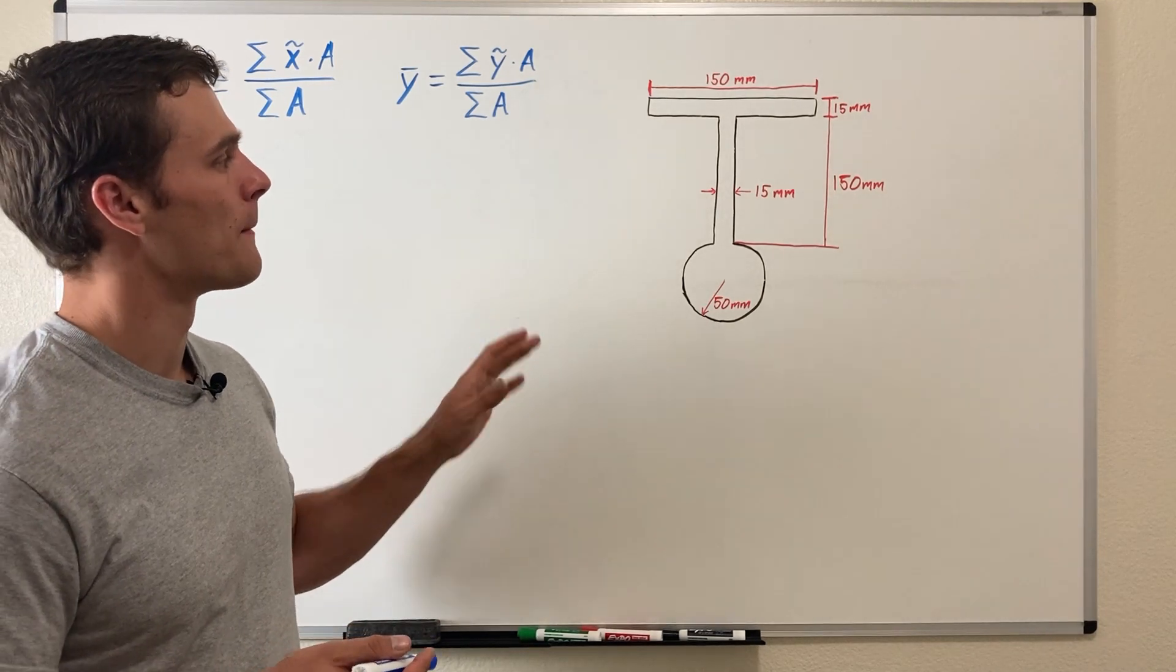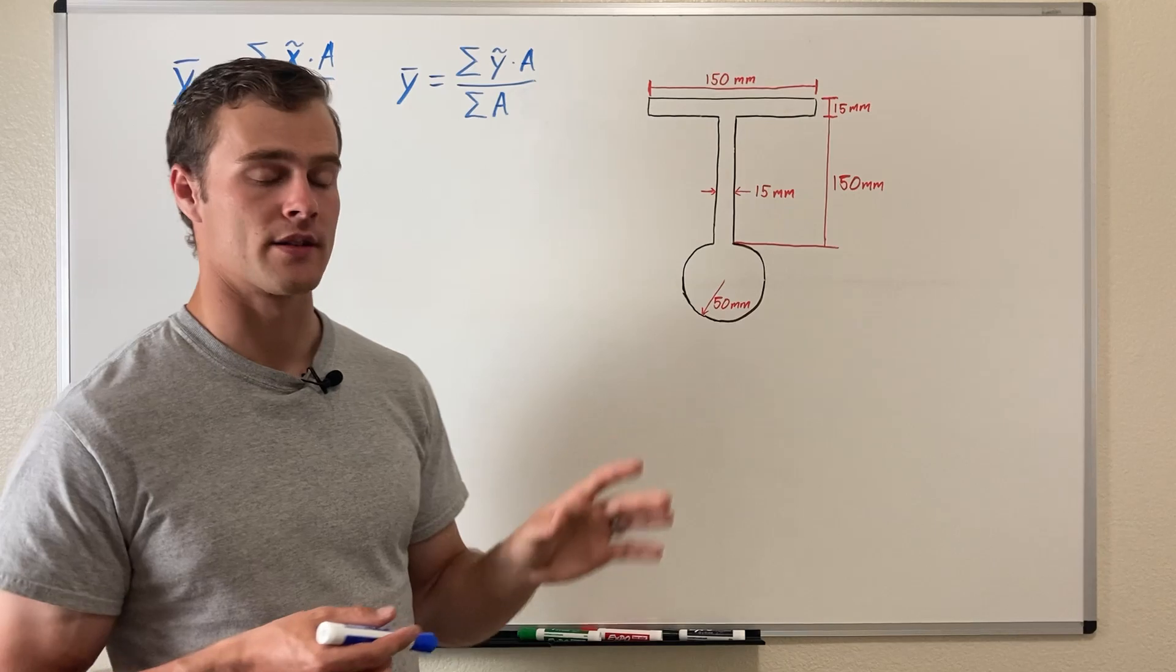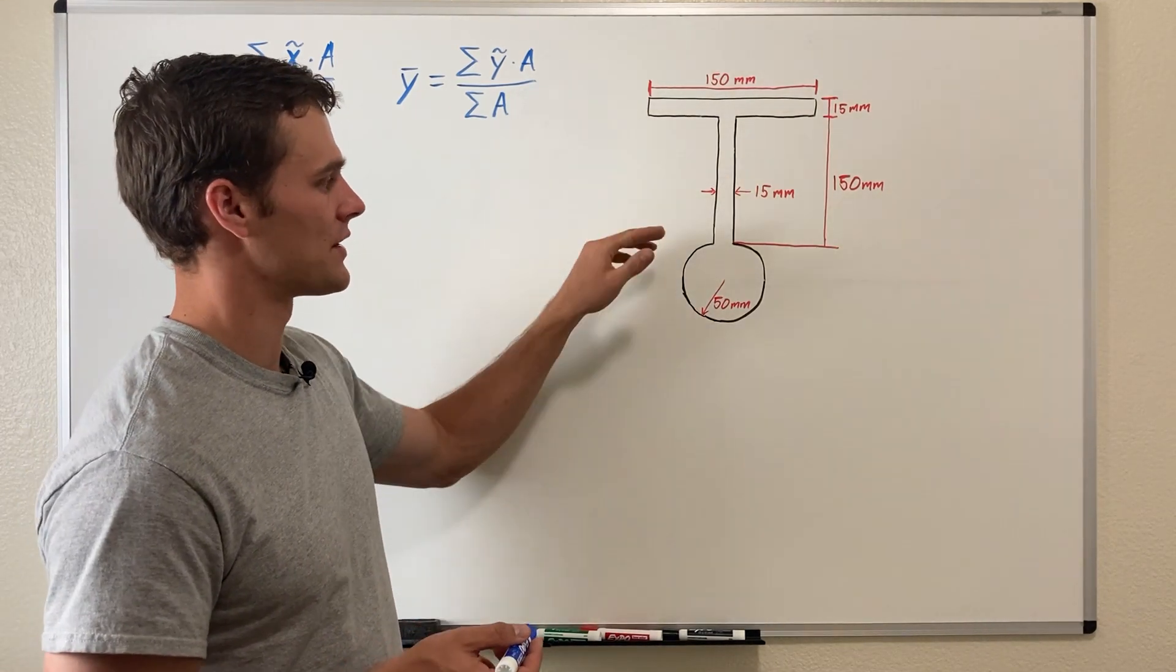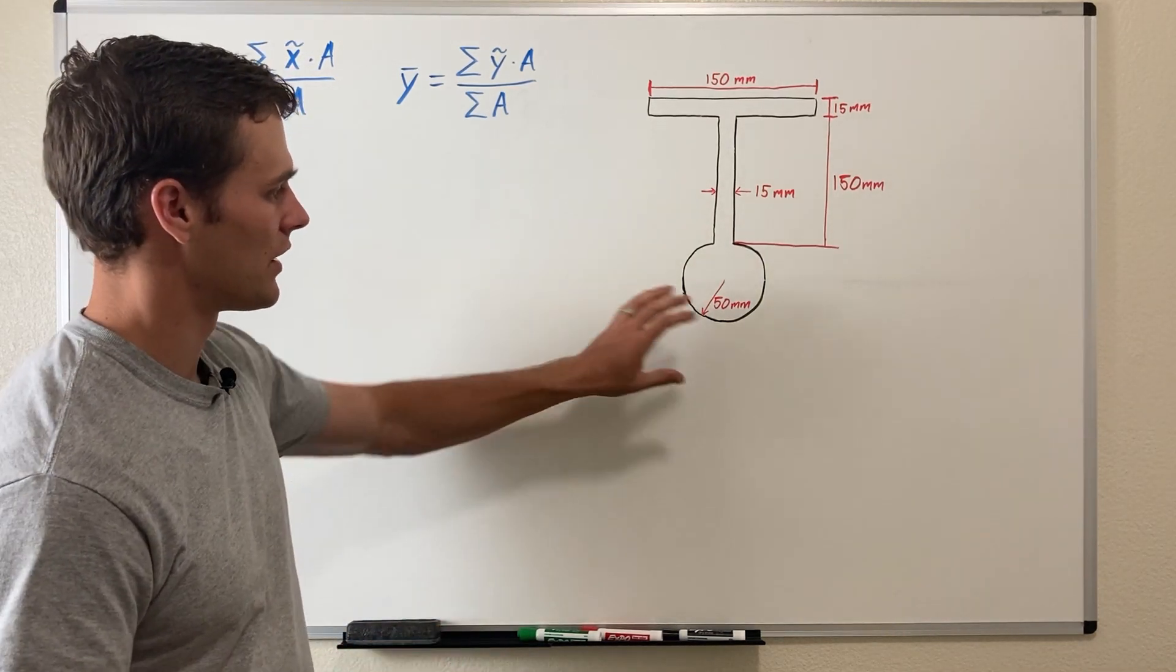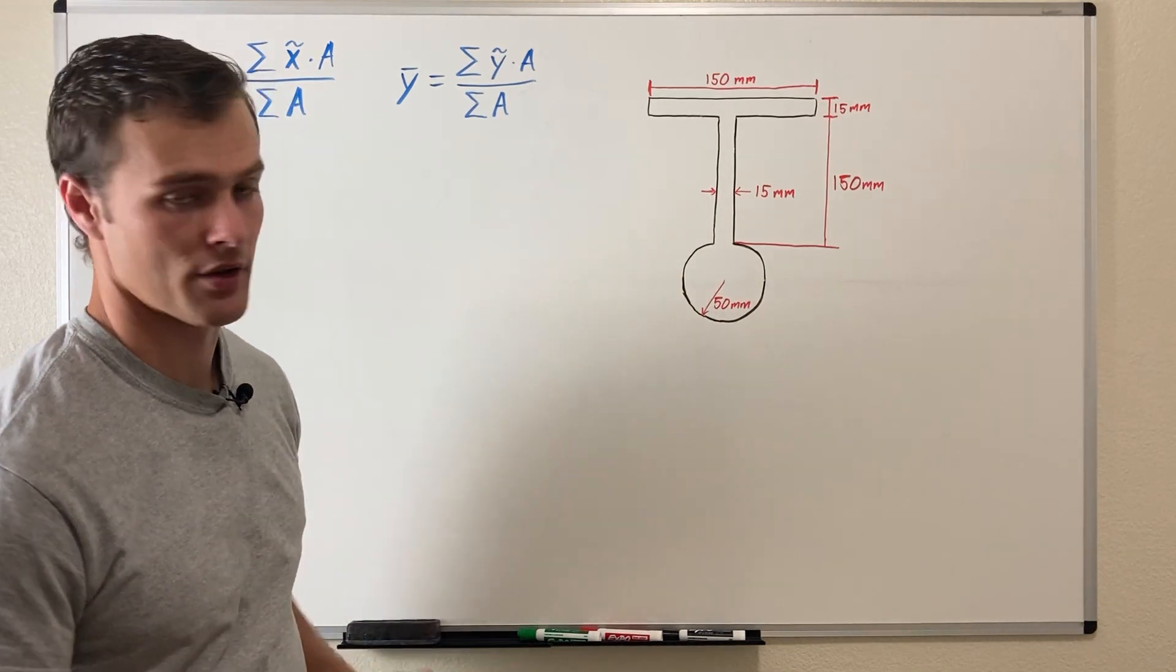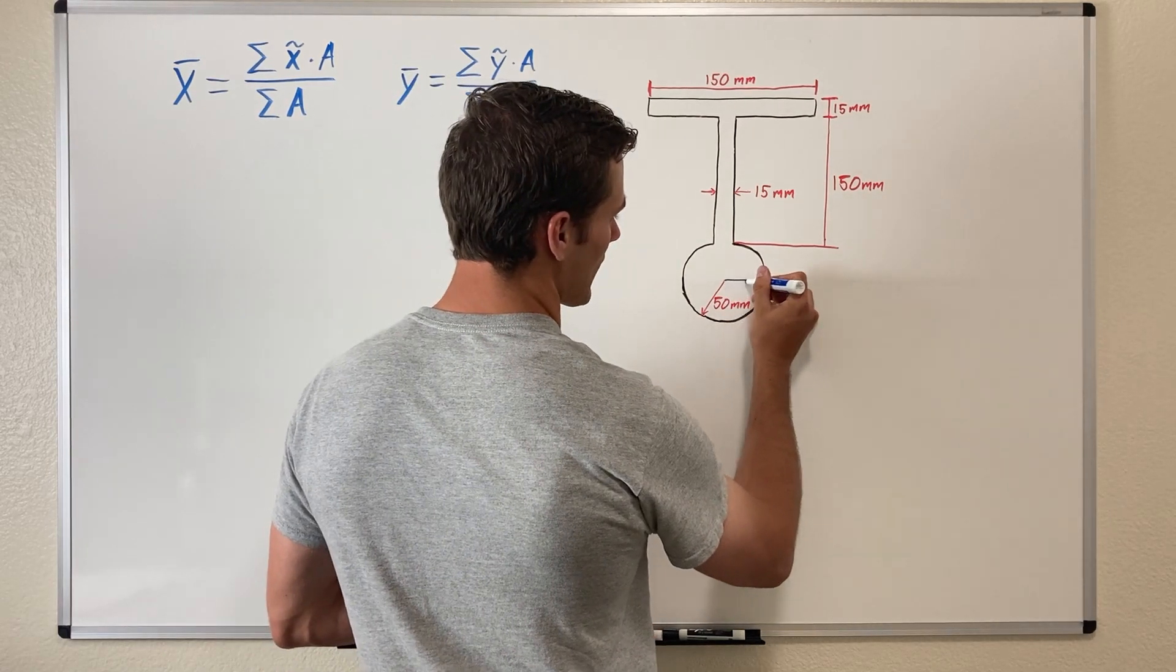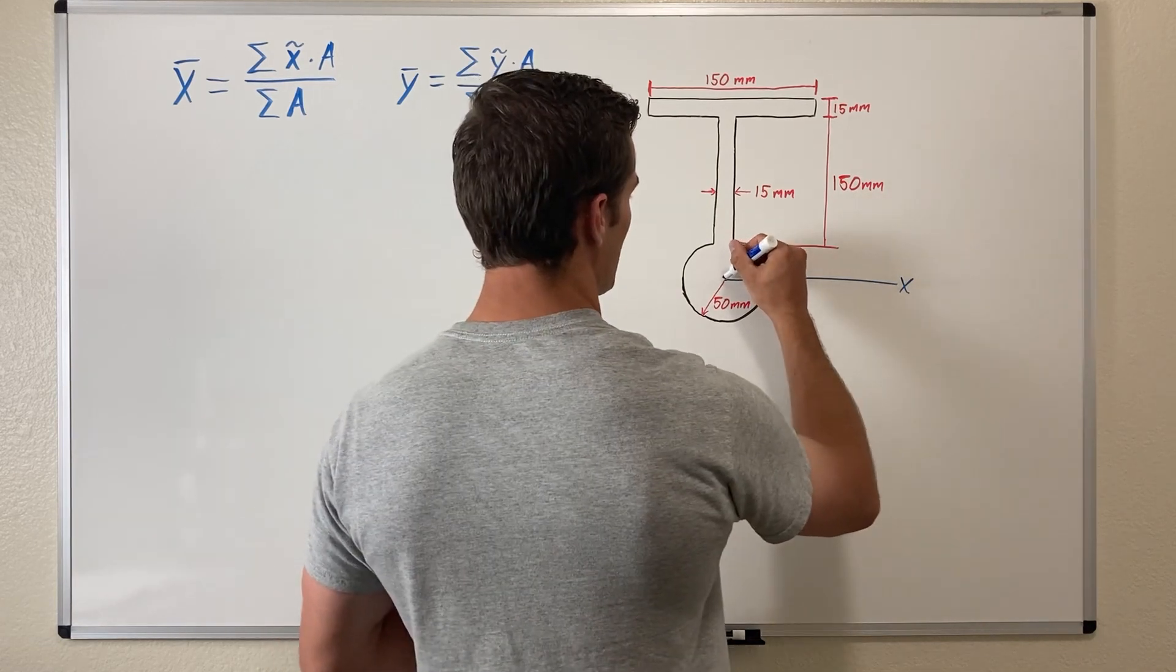In this case we're not looking for it in any particular spot, so my next recommendation would be to establish your coordinate system where the origin is at the centroid of one of your composite parts. Just eyeballing it, we have a circle here, so I'm going to establish our coordinate system with the origin at the center of that circle.